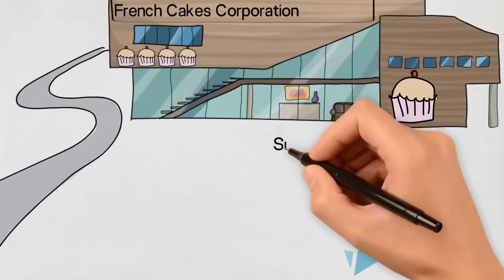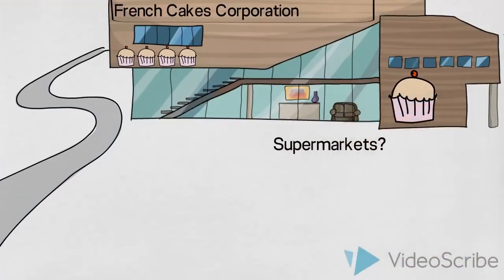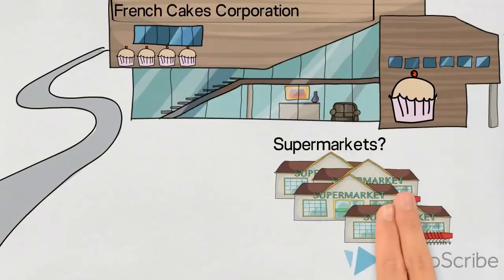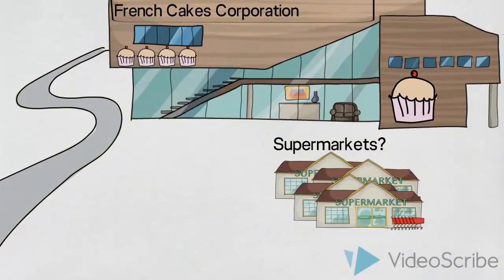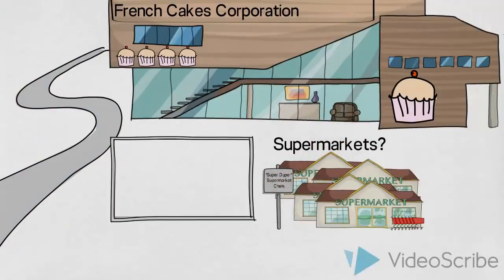We might also imagine that the company is keen on distributing their products through supermarkets in order to reach a large number of people from their target group in this way. In addition to the previously discussed factors, we would also ask them to consider some facts about their competitors.